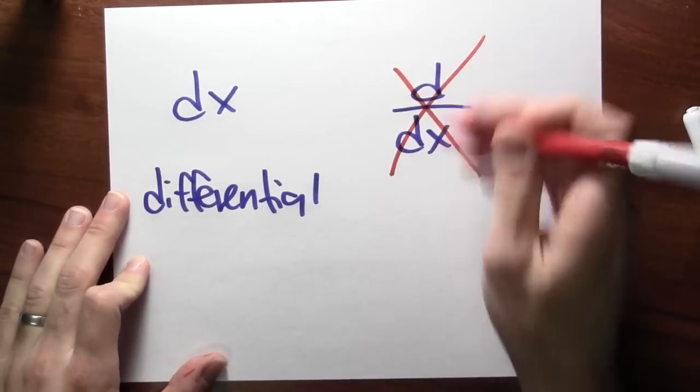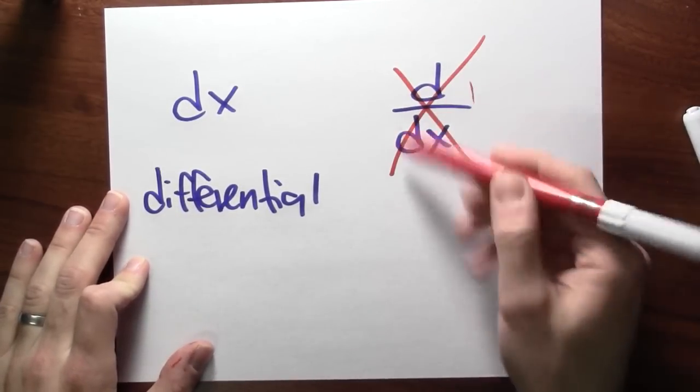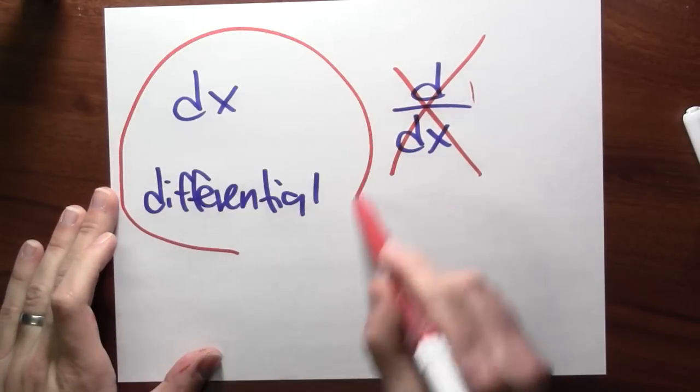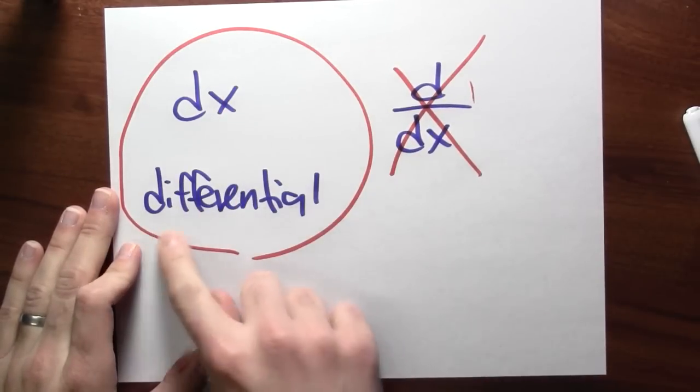We thought about that a little bit already, right? As an operator, this is the thing that does the differentiation. This object is what we're going to study right now. It's called a differential. But what does that even mean?